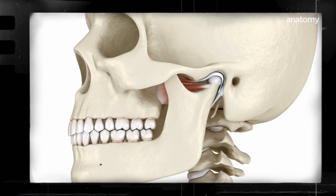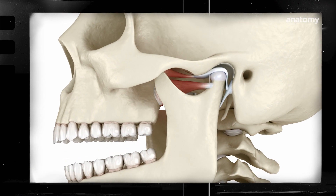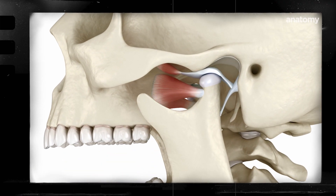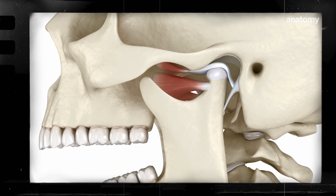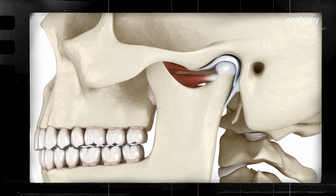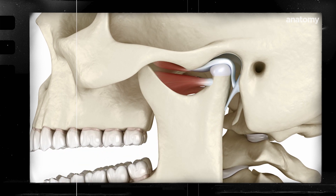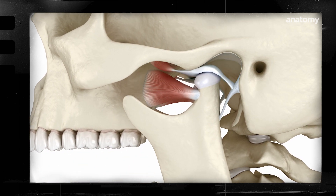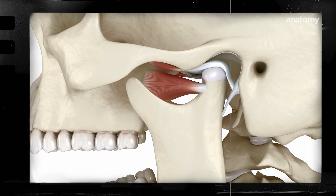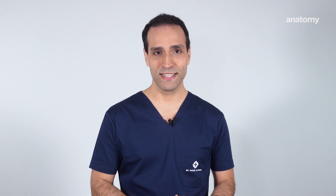During function, the condyle rotates and slides forward and downward, and together with the disc they leave the fossa and move under a bone eminence. This movement requires a complex coordination of an extensive muscle system.